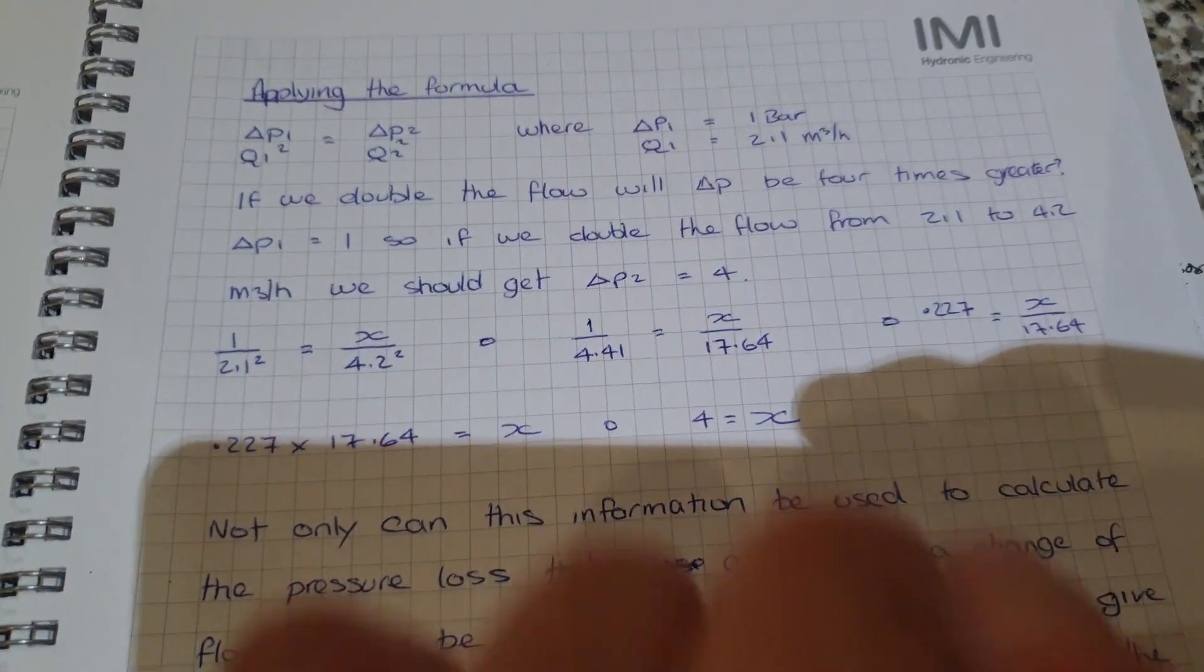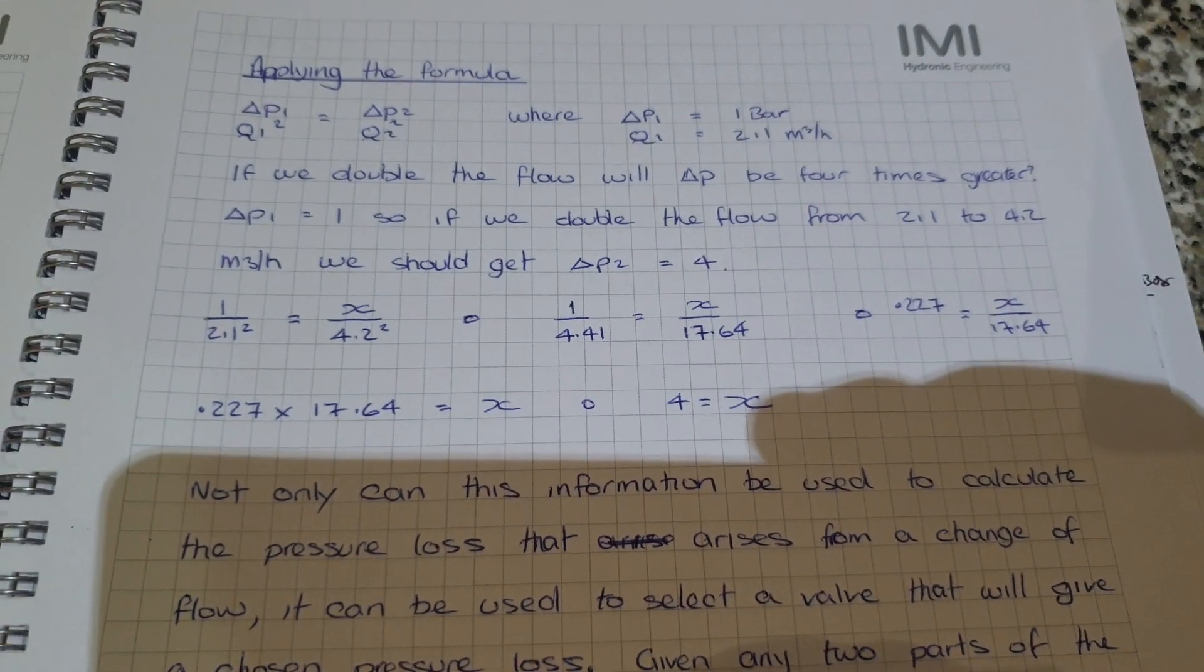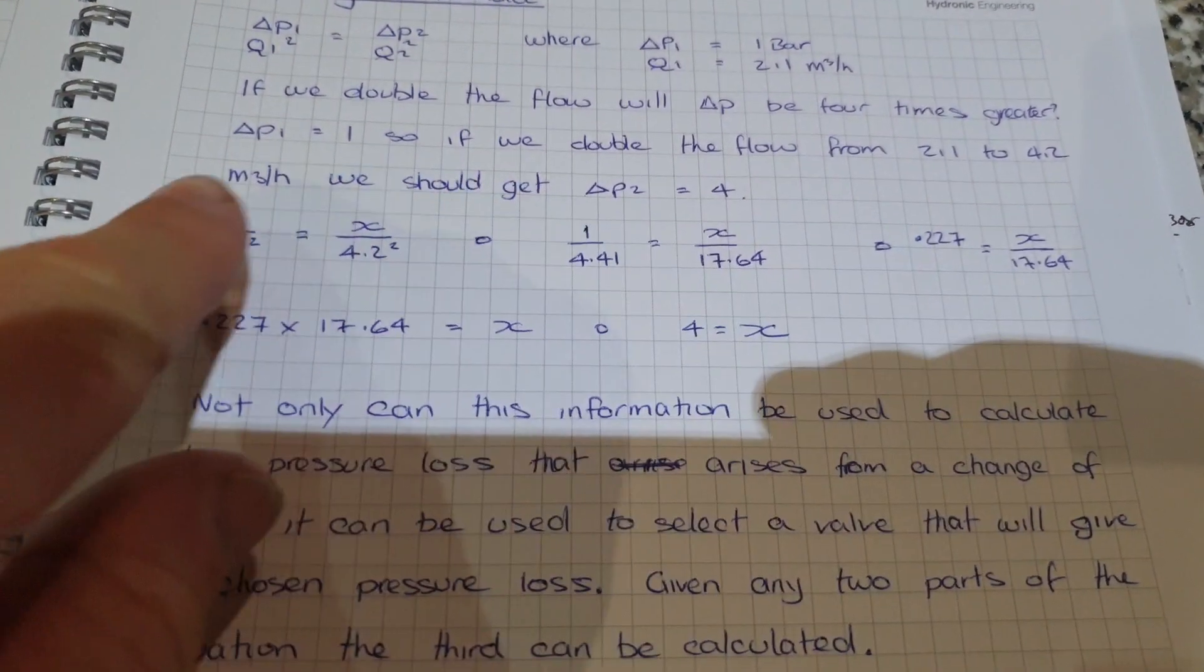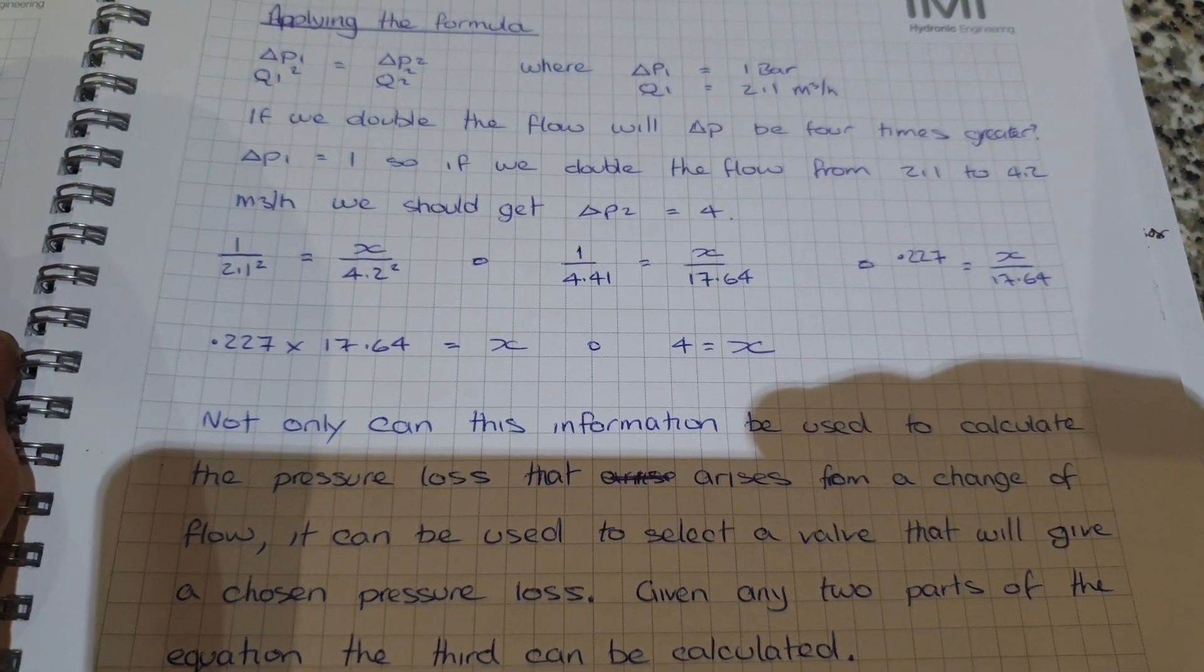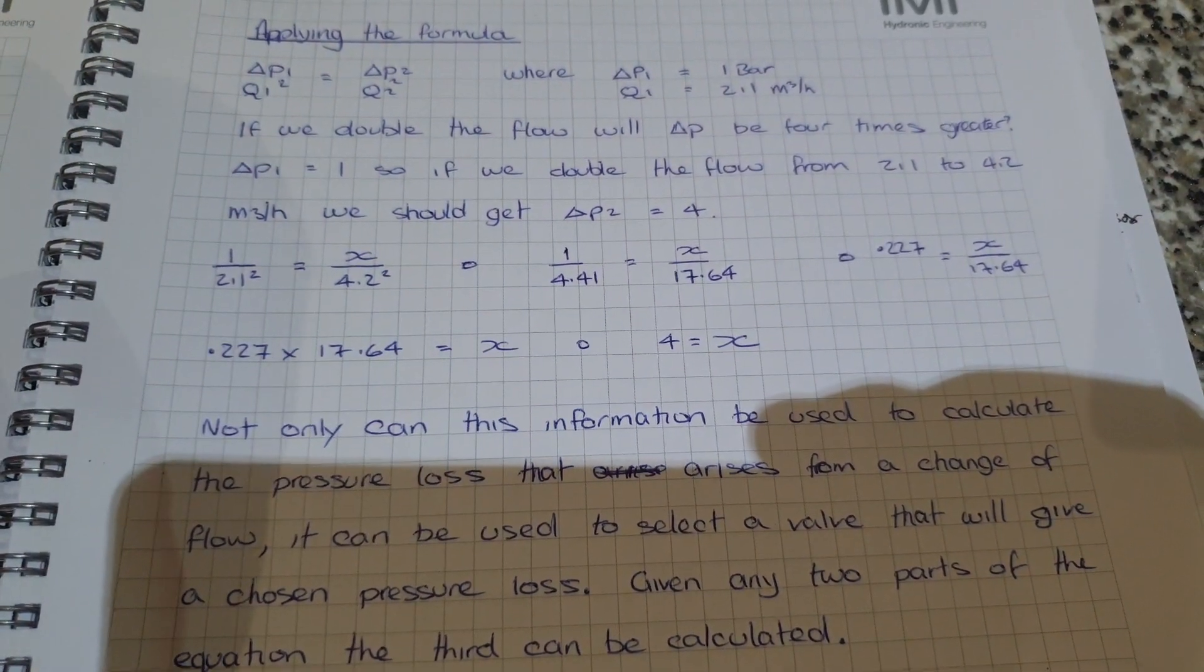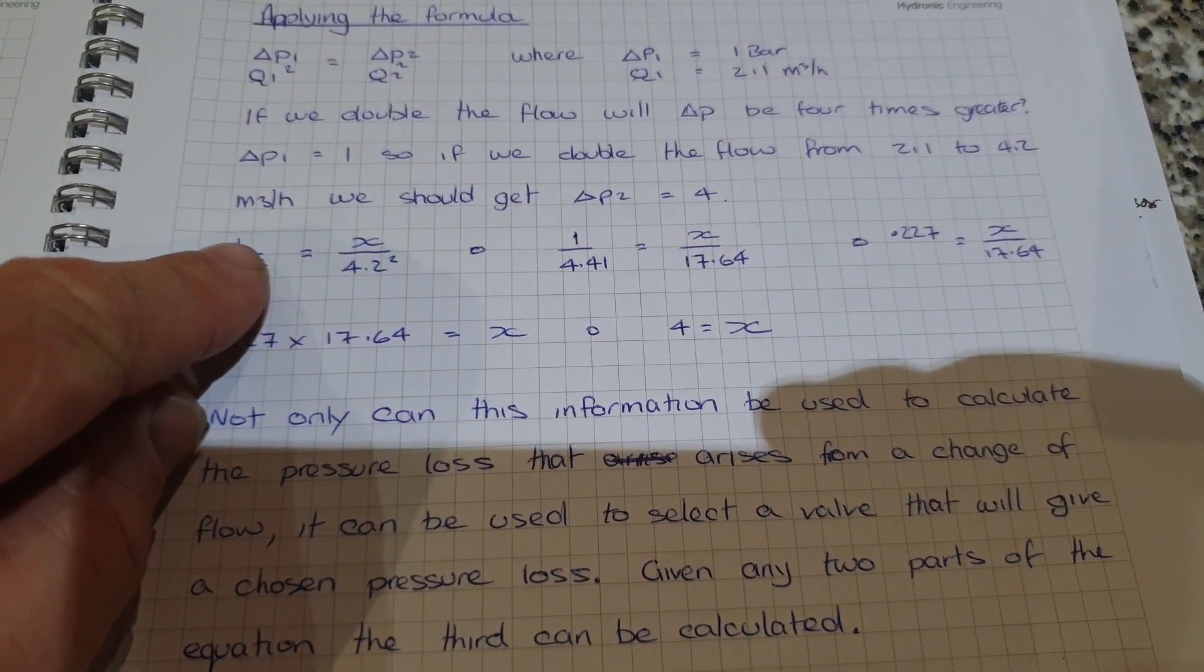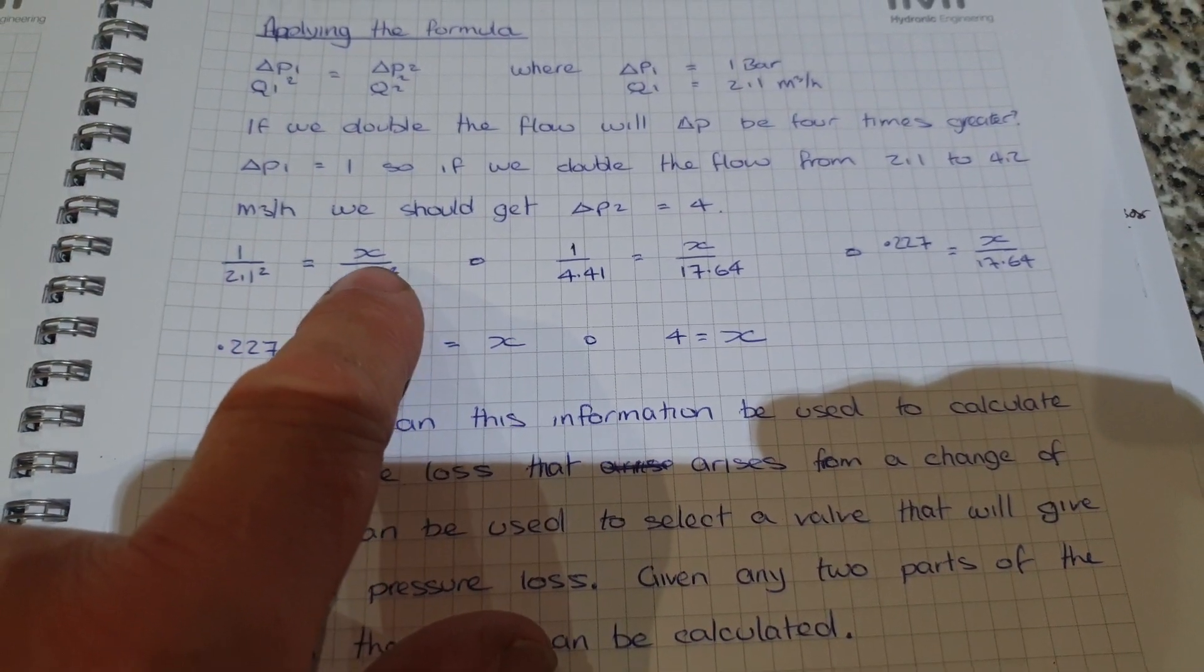We can test the formula. If this formula will do what we say it'll do, and we know that if we double the flow the delta P will be four times greater, then we can apply the formula to test that out. We've got a valve with a KVS or KV value of 2.1. Our delta P1 is one bar, which is what we've used for the standard. Our flow rate is 2.1 cubic meters per hour, which gives us the KV or KVS value.